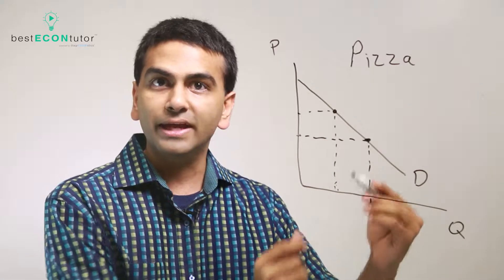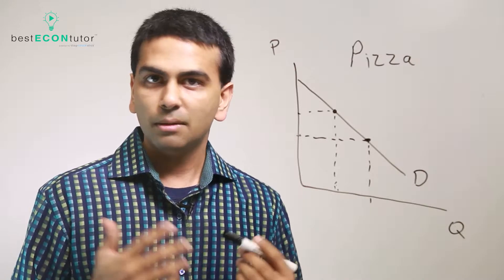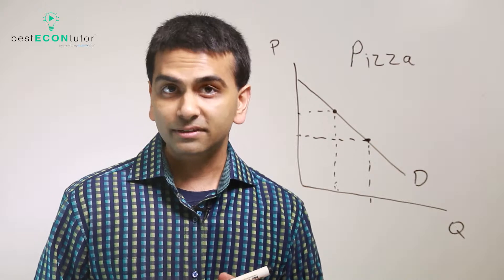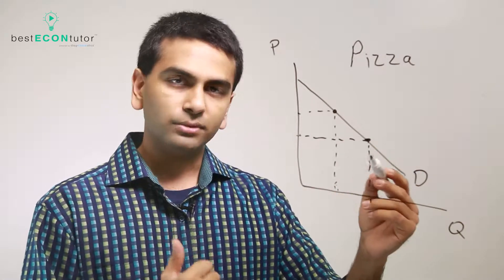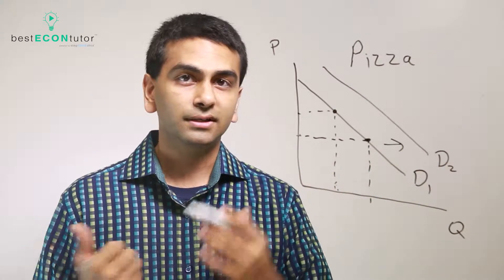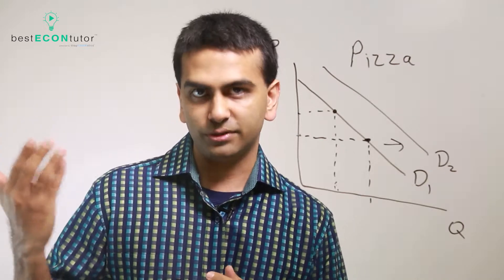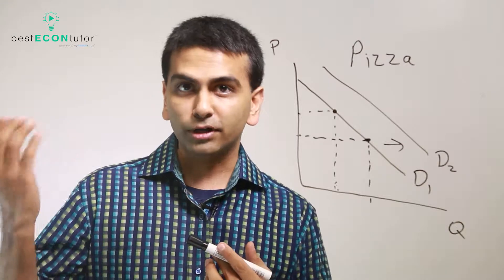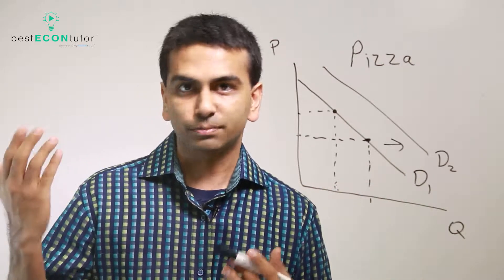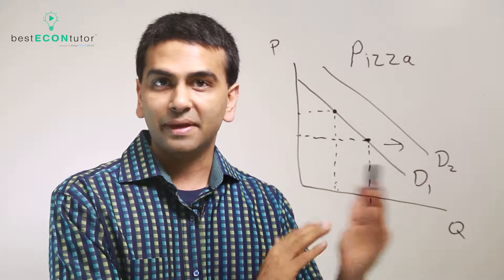So what type of things would cause a change in demand — what would cause the entire curve to shift? One thing is prices of related goods. Not the price of pizza itself, but let's say Coca-Cola, which is a complement to pizza. If Coke becomes cheaper, people will actually demand more pizza, so the demand curve for pizza shifts to the right. On the other hand, if we look at a substitute good like burgers, and burgers became cheaper, you'd probably want more burgers and less pizza, so demand for pizza shifts to the left. You have to ask: is that a substitute, a complementary good, or unrelated?